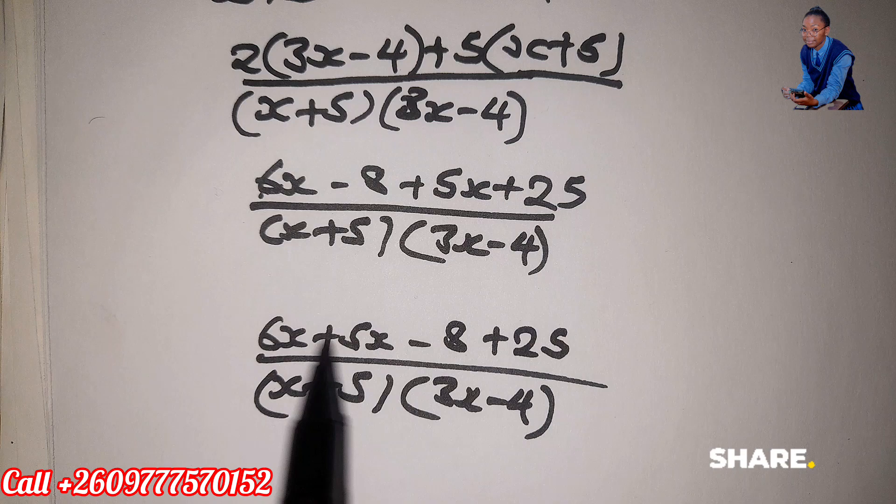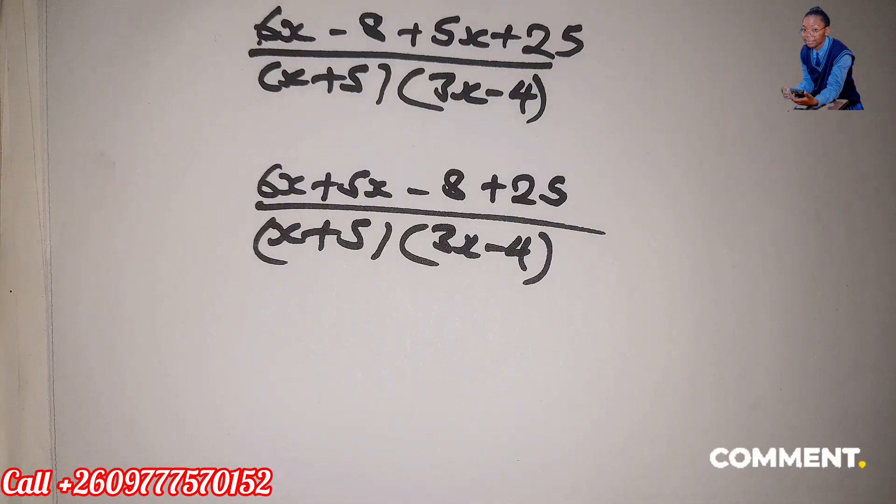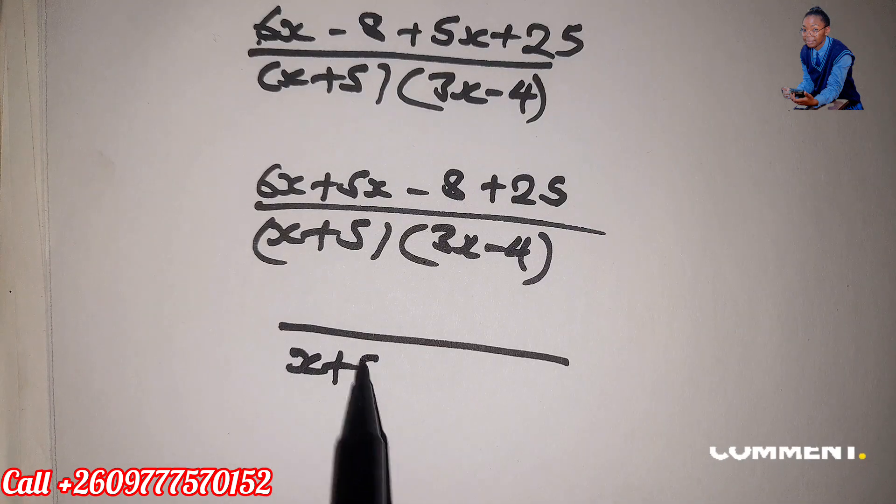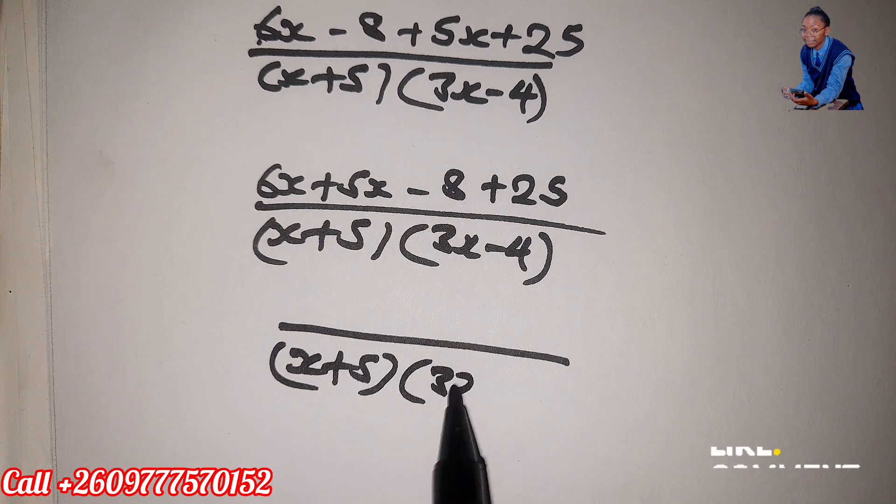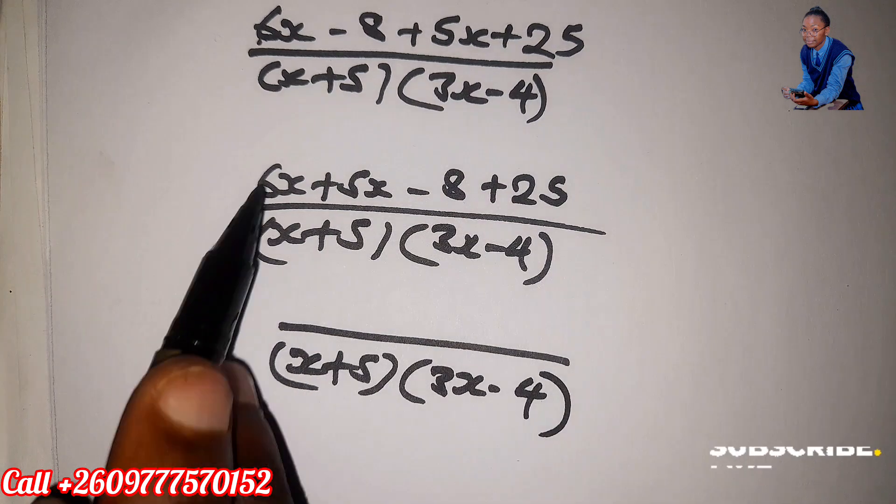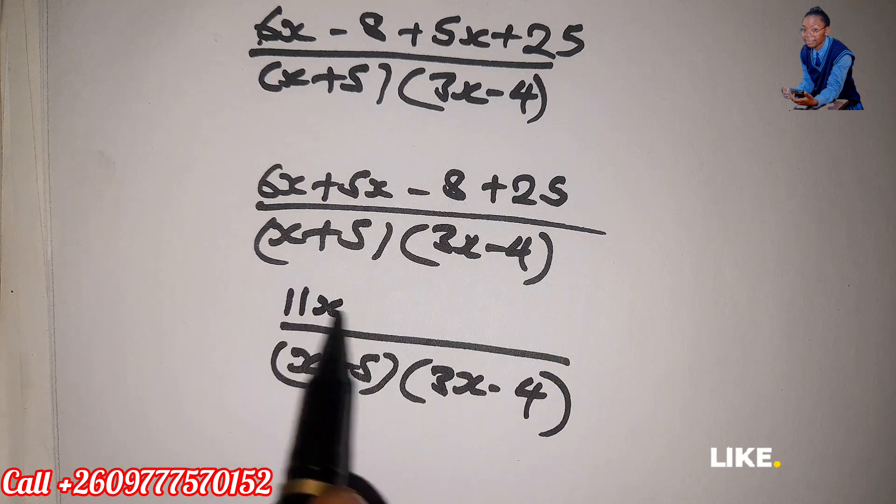Okay, so the next step, it will be x plus 5, 3x minus 4. 6 plus 5, it will be 11x.